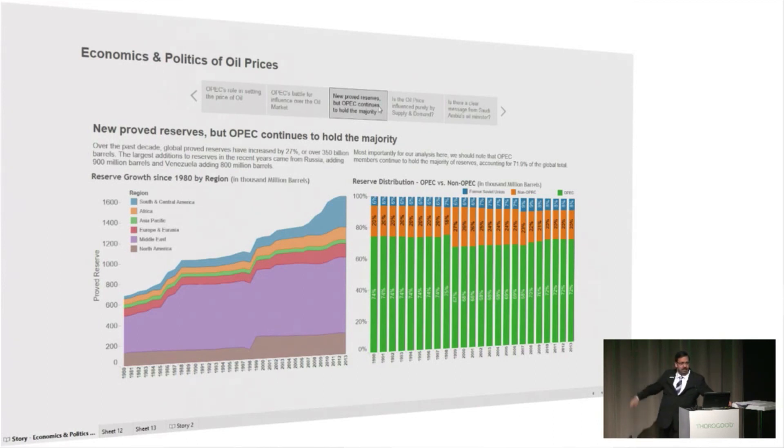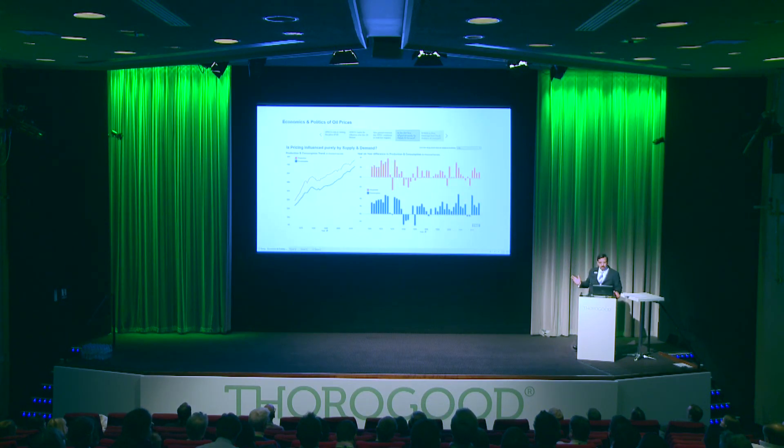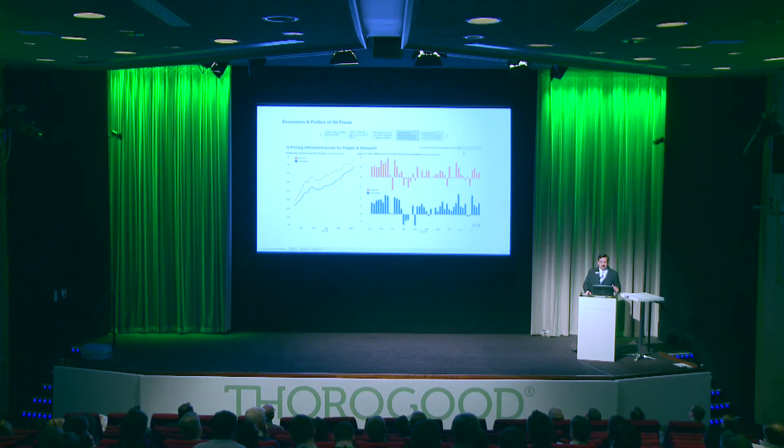My next chart is trying to understand if it's purely a case of supply and demand — if there's no demand, that's probably what's causing the price to drop. On a global level, the orange line is production and the blue is consumption, and they seem to be tracking each other quite closely. Gavin was referring to asking questions earlier — people will ask how does this matter to my country or region? In order to tell a convincing story, you need to be able to answer those questions. So I've set up a drop-down box to select a country and let's see how that looks.